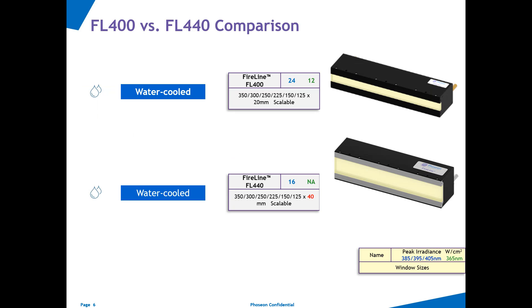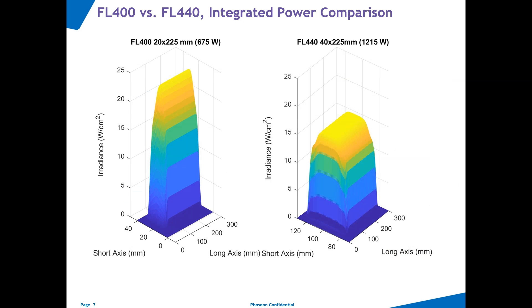In this context, I would like to mention Phoseon's FL400 and FL440 water-cooled products. The FL400 shown above has a peak irradiance of 24 watt per square centimeter with a 20 millimeter wide window, while the FL440 has a peak irradiance of 16 watt per square centimeter but packs a 40 millimeter wide window. Looking at the ray tracing simulation profiles, it becomes clear that while the peak irradiance of the FL400 is significantly higher, the total power or the volume under the intensity surface is almost double with the wider FL440. The comparison here shows 675 watts versus 1215 watts at 225 millimeter length.